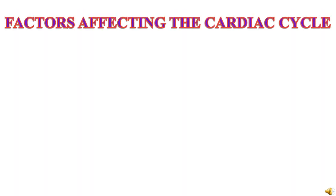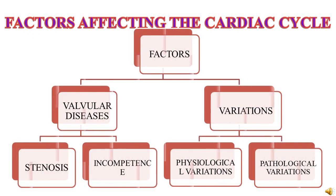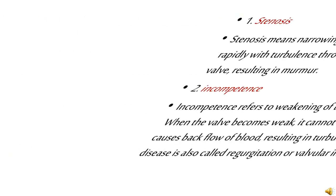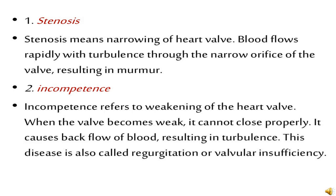Discussing the factors affecting the cardiac cycle: they are divided into two main classes — valvular diseases and variations. Valvular diseases are divided into stenosis and incompetence. Stenosis means when the heart valve narrows, resulting in rapid turbulent blood flow due to the narrow orifice, producing a murmur audible with a stethoscope and detectable on ECG.